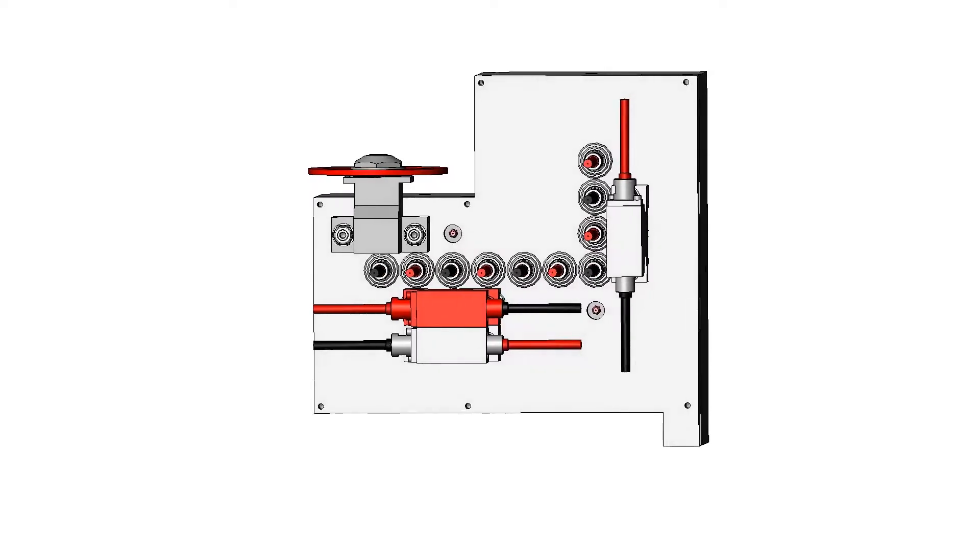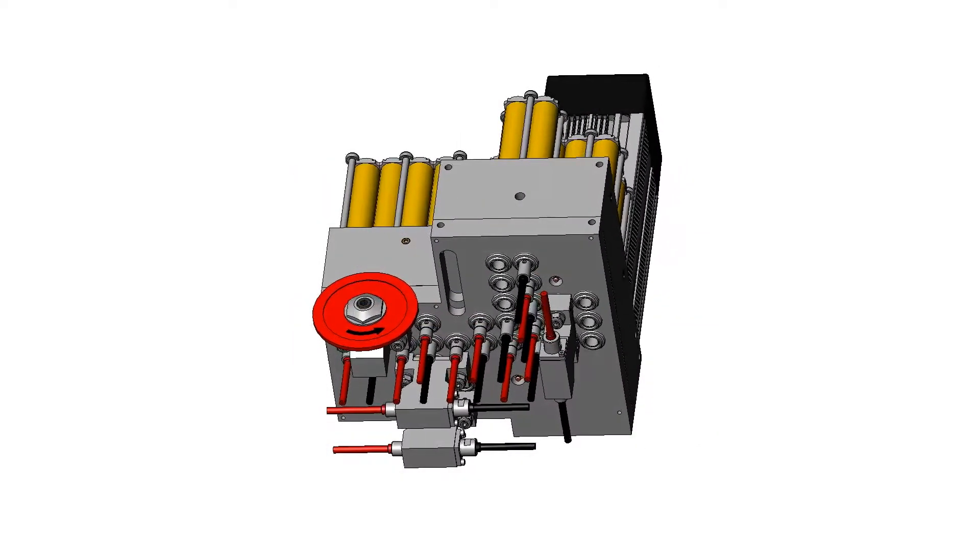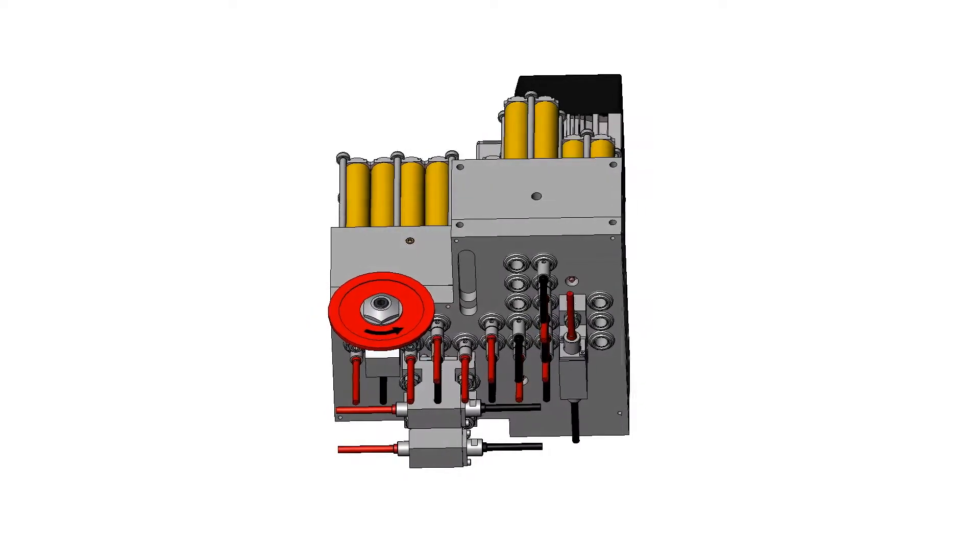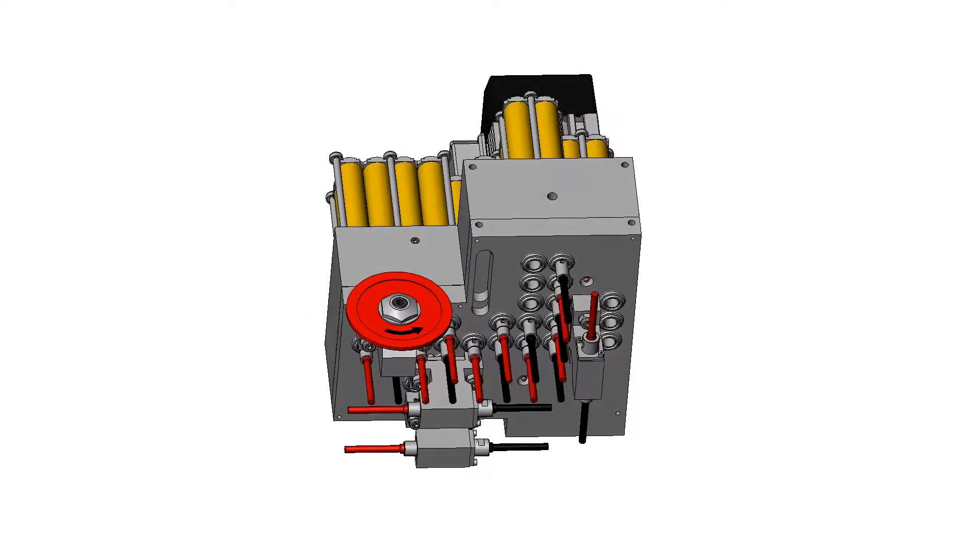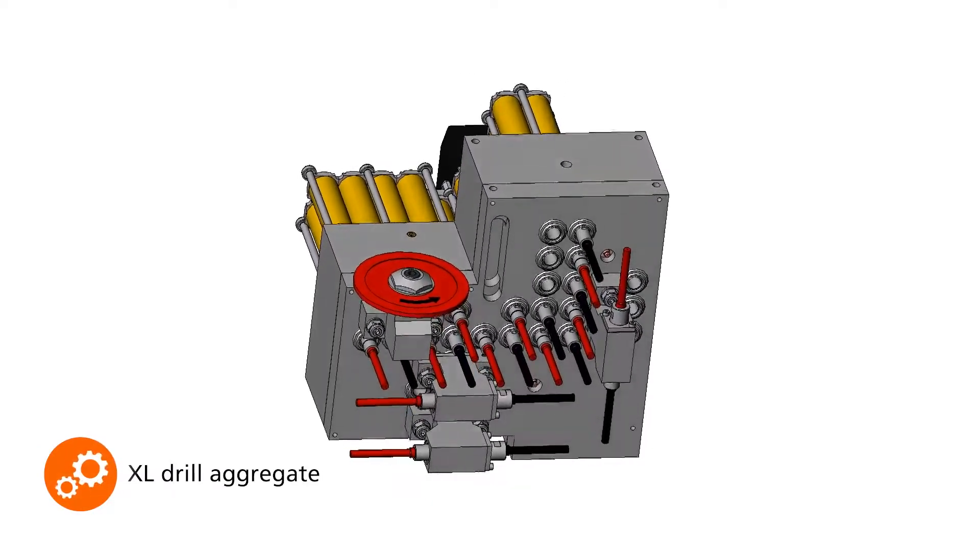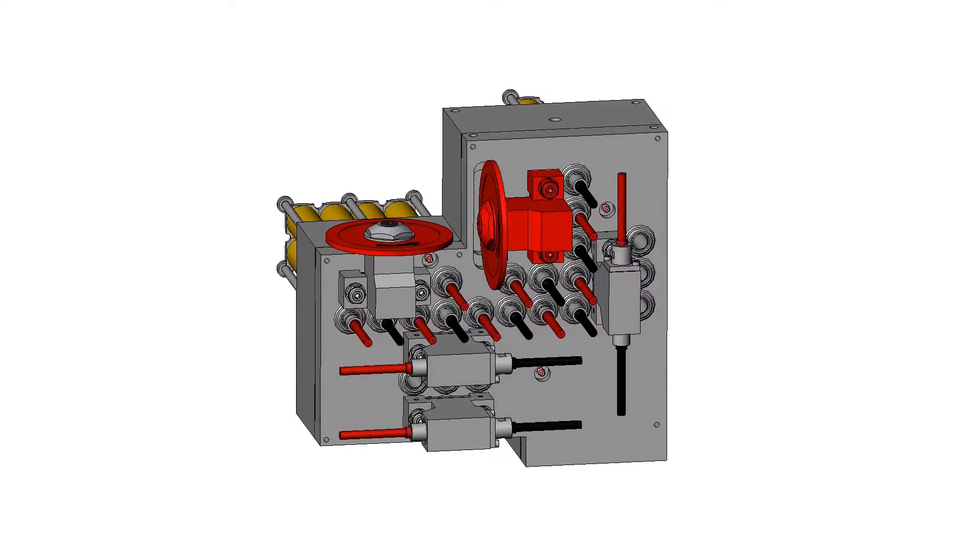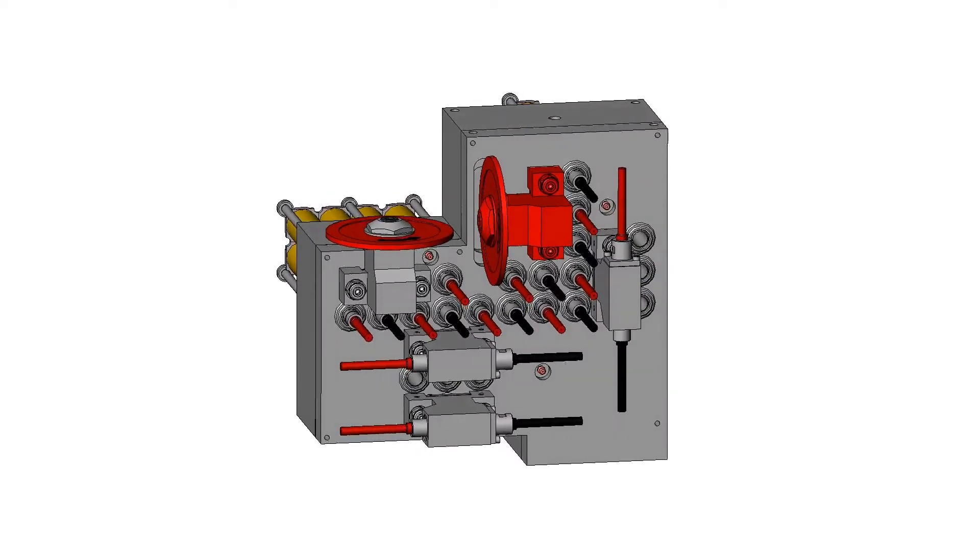Optionally, two additional horizontal outputs are available. For line drilling in furniture and structural engineering, the larger XL drill head offers 15 vertical and 6 horizontal spindles and can also be supplemented with a second grooving saw and additional horizontal drills.